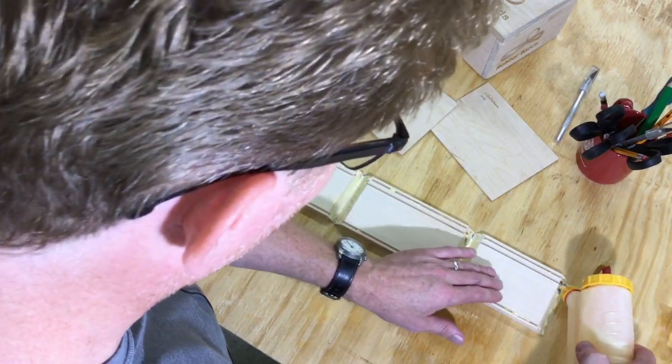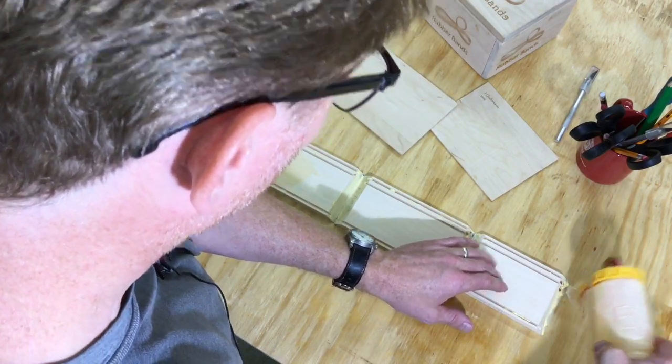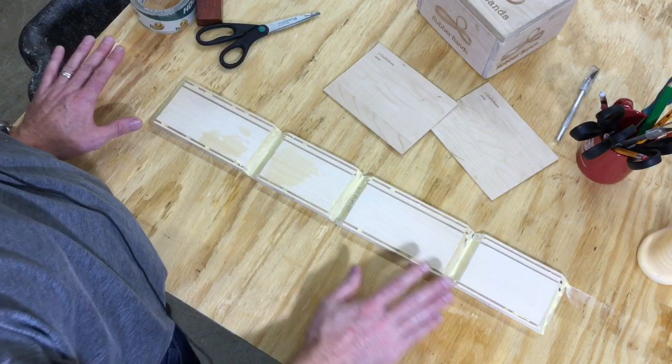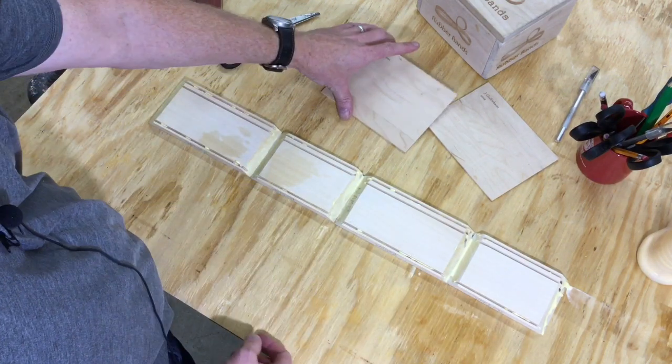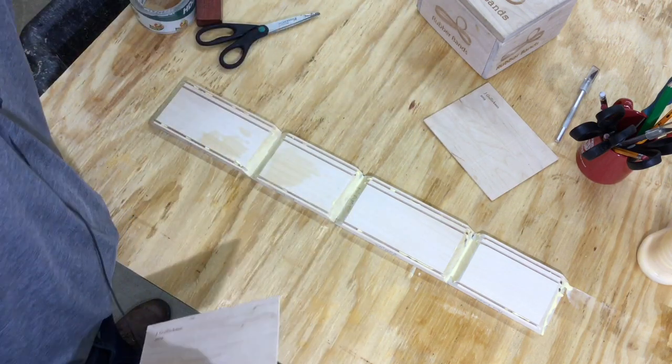Now I have glue in all the places I need. A little bit over here. Top groove, bottom groove, miter, miter, miter, miter. Now I'm ready to put my box together.